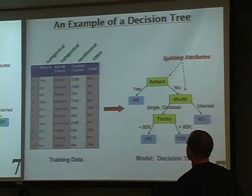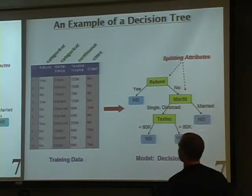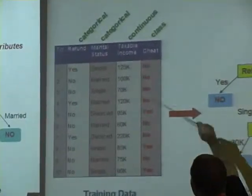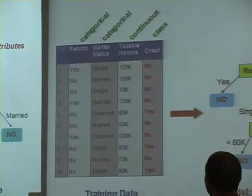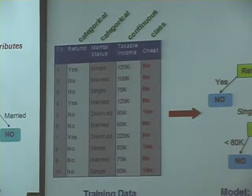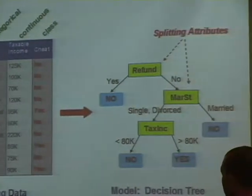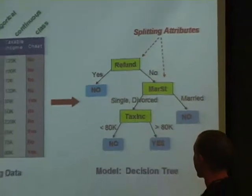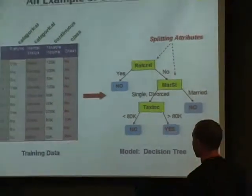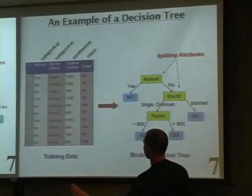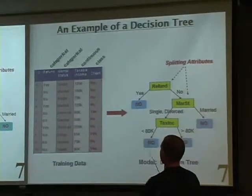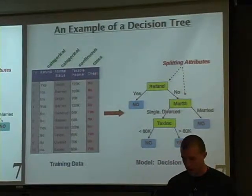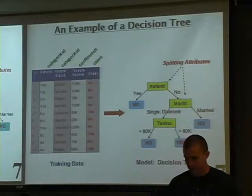An example of a decision tree we saw last time uses whether someone got a refund, their marital status, and their taxable income to predict whether they cheat on their taxes. When you apply it to new data you won't know whether you're right or wrong, but applying it retrospectively lets you measure accuracy by comparing predictions to known outcomes.